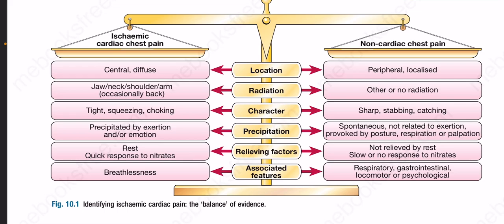Here is identifying ischemic cardiac pain — the balance of evidence. Ischemic cardiac chest pain: location is central and diffuse; radiation to jaw, neck, shoulder, arm, occasionally back; character is tight, squeezing, choking; precipitated by exertion and/or emotion; relieving factors include rest and quick response to nitrates; associated features include breathlessness.